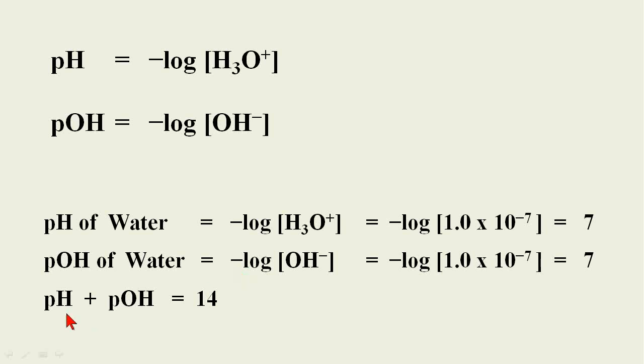It allows us to sum the pH plus the pOH to get the number 14. Once you know the pH of a substance, if you subtract it from 14, you get the pOH.